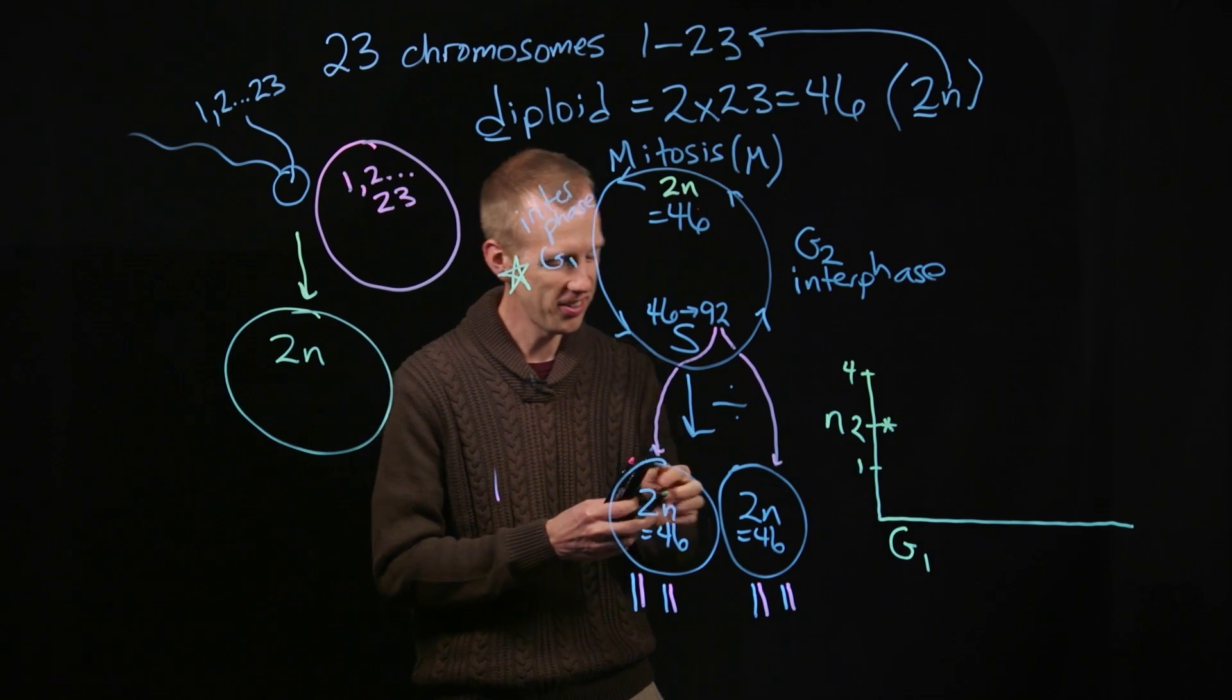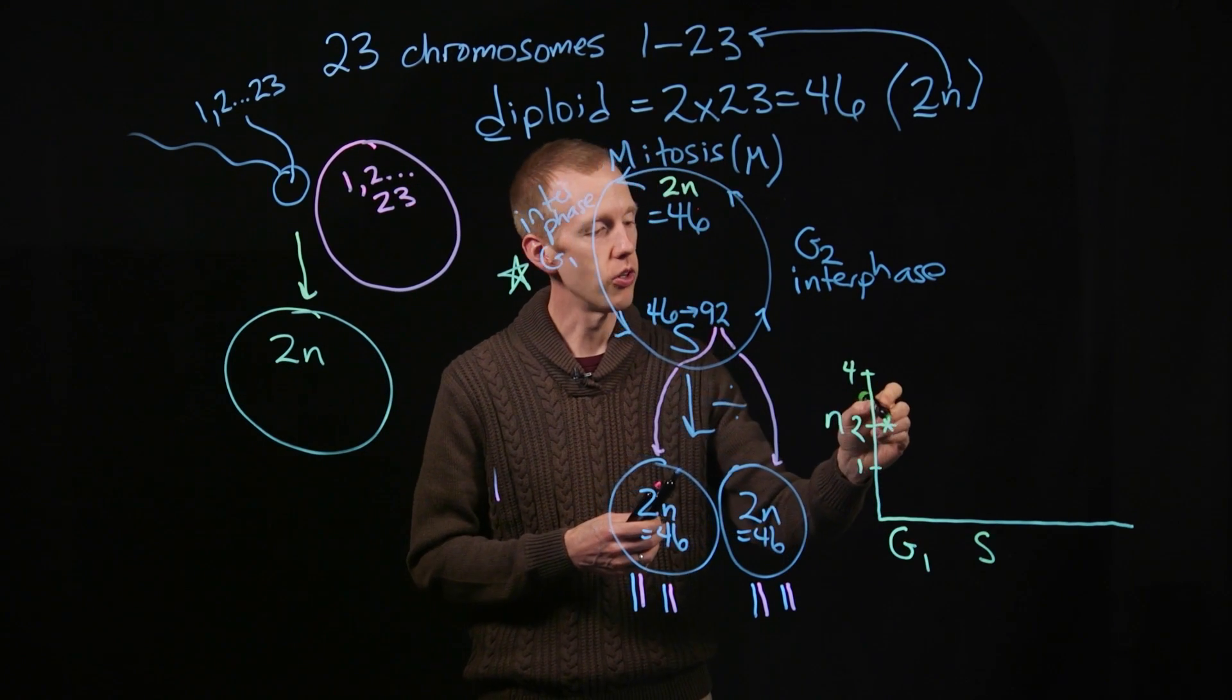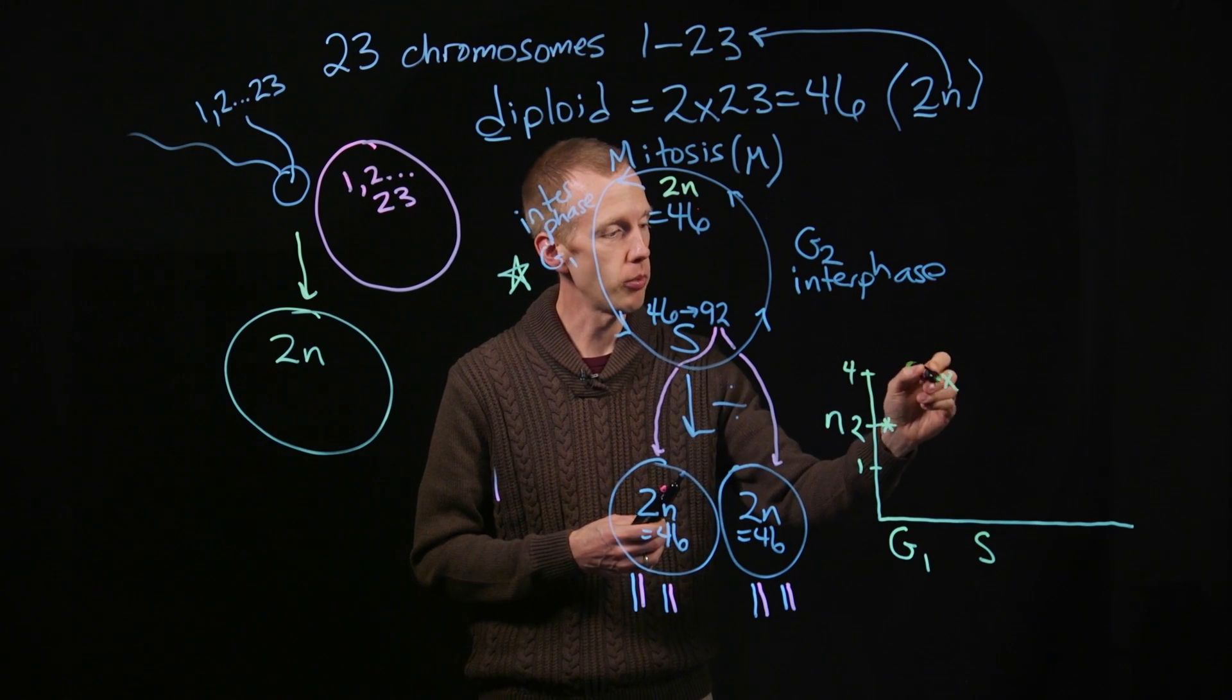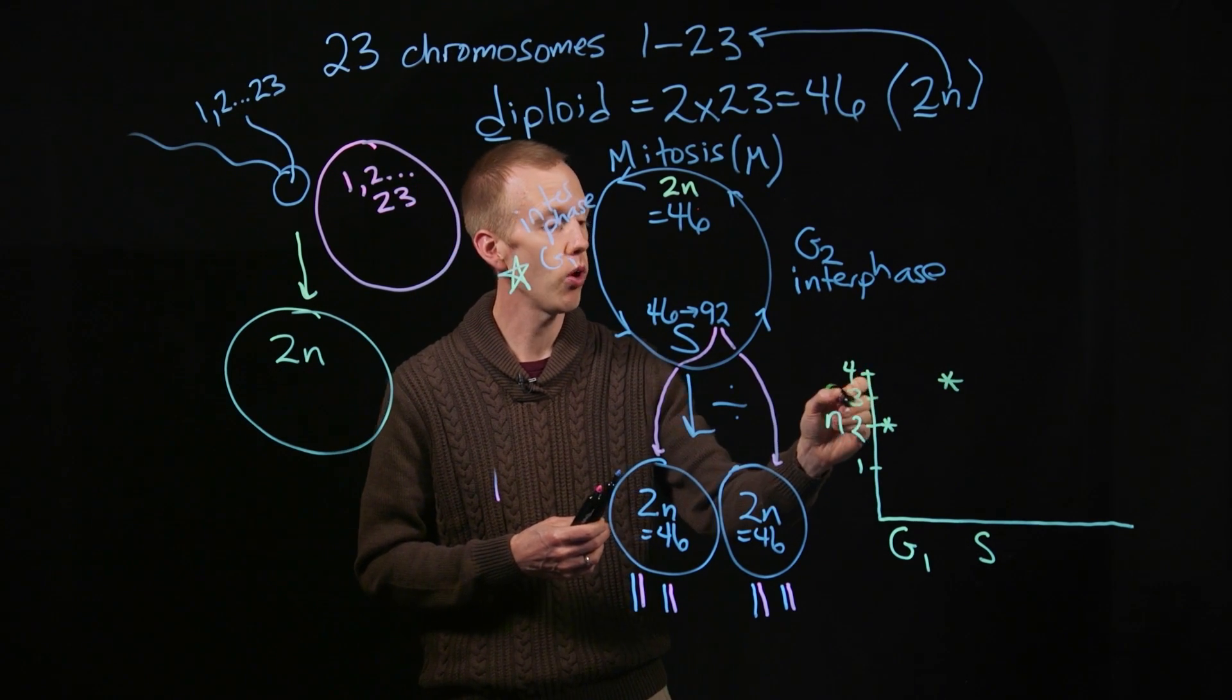Then the cell undergoes synthesis phase. And in synthesis, there is a doubling in the amount of genetic material in the cell. So we go from 2n to 4n.